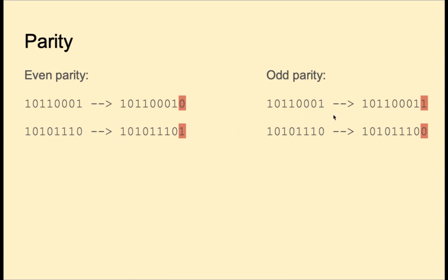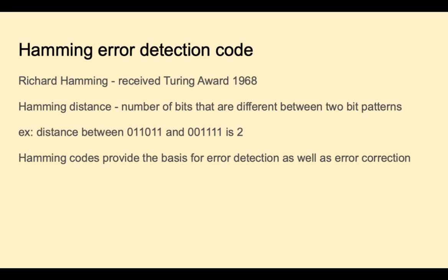Similarly for odd parity: if we have an even number of ones, we set the parity bit to one so that the number of ones is odd. And if the number of ones is already odd, we set that parity bit to zero. Parity can be used to detect a one-bit corruption of data, but it can't correct the data.